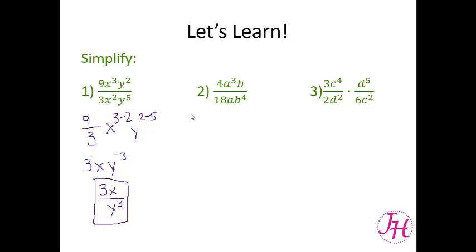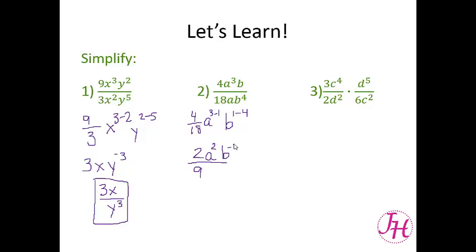For number 2, we have 4 over 18 times a to the 3 minus 1 times b to the 1 minus 4. So 4 over 18 reduces to 2 ninths — we have a 2 on the top and a 9 on the bottom — and then we have a squared and b to the negative 3. That negative 3 means it's coming down, so our final answer is 2a squared over 9b cubed.